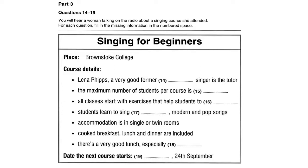I would really recommend this course. Brownstoke College is an old building surrounded by a beautiful garden. Accommodation is very comfortable — single and twin rooms are clean and warm, and three meals a day are included: a cooked breakfast, lunch, and an evening meal. The lunch is very good and the salads can be recommended. Courses begin on the last Tuesday of the month, so the next one begins on the 24th of September and continues until Thursday the 26th of September. I would advise you to reserve a place early, because it's certain to be very popular.